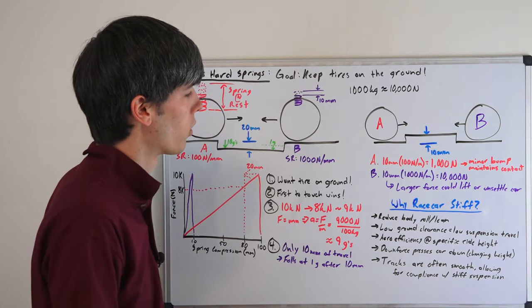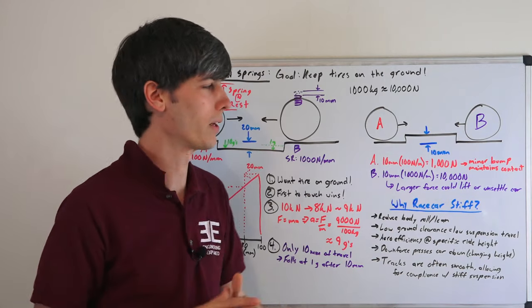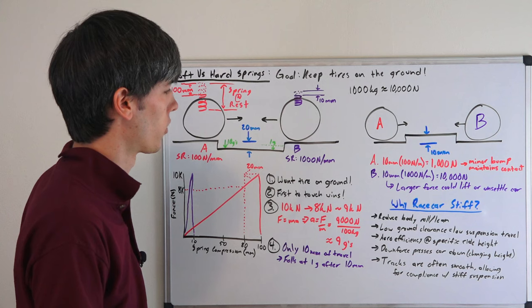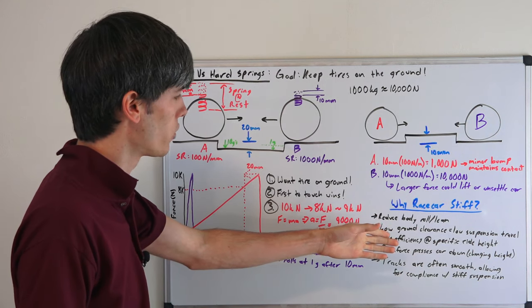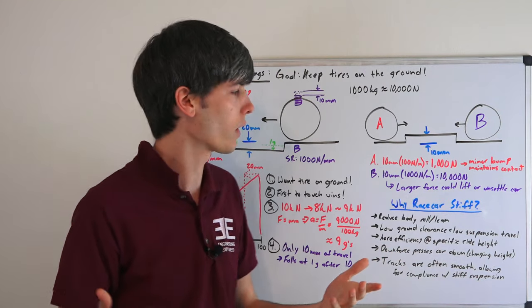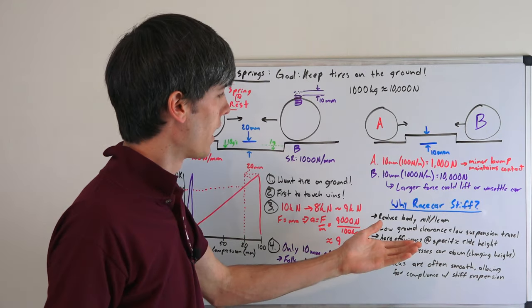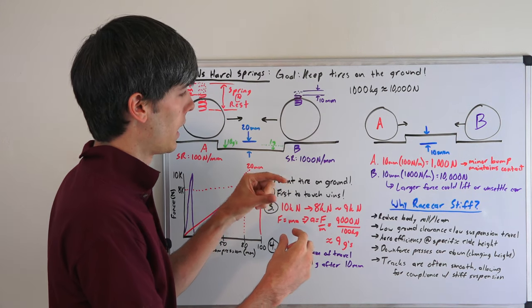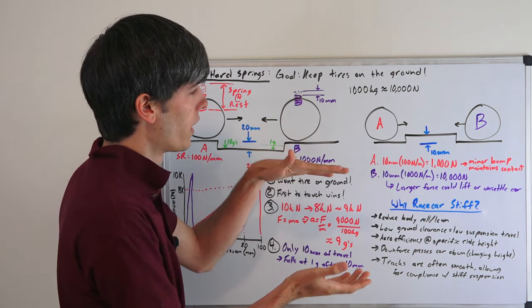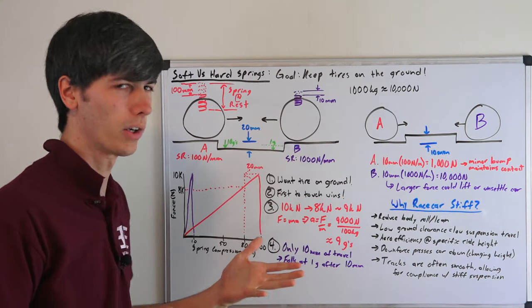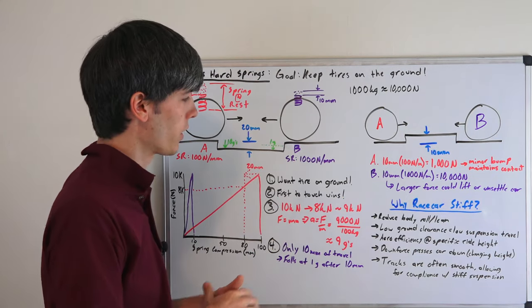So you want to reduce body roll and body lean that maintains a certain suspension geometry. That's obvious and you can do that by stiffening the suspension. You also want to maintain low ground clearance. So low ground clearance because you want a low center of gravity. And so by doing that, you have low suspension travel. Because if you have a large amount of suspension travel and you have a little bit of ground clearance, you're just going to be bottoming out and obviously you want your tires to be contacting the ground, not your vehicle.